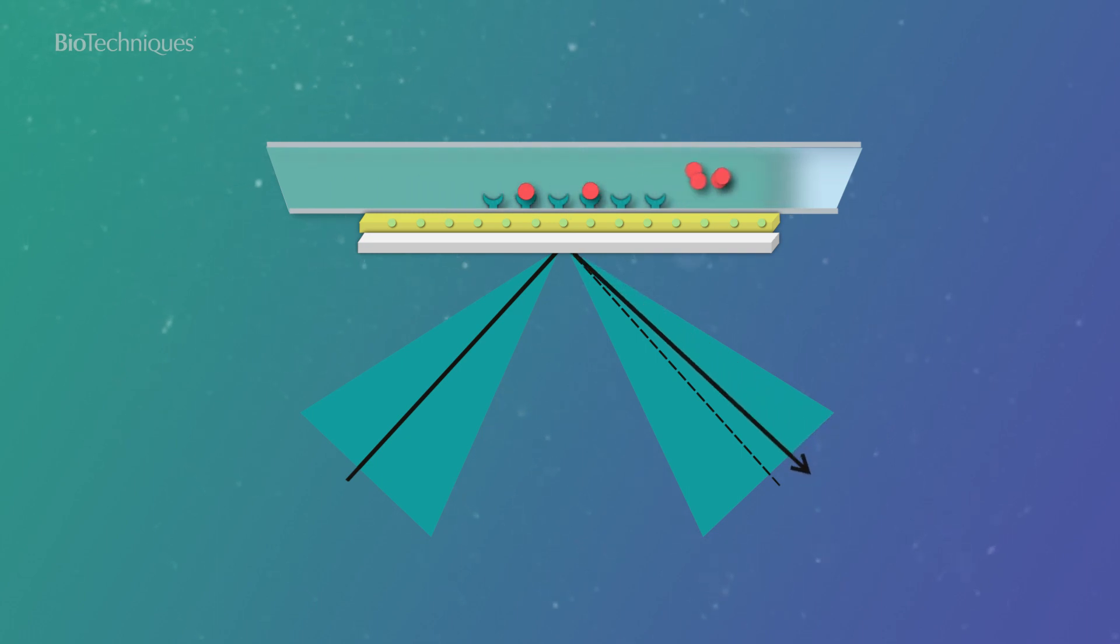Any remaining bound analytes can be removed using a regeneration solution, which encourages dissociation. The refractive index at the sensor chip surface is monitored throughout the assay, allowing researchers to observe analyte association and dissociation to the ligand.